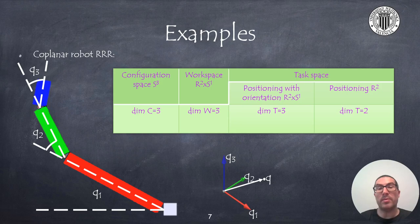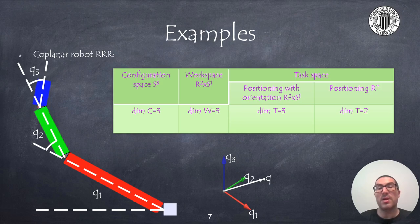Now we will analyze different robot types and the dimensions and topology of the configuration, work, and task spaces. In the case of an RRR coplanar robot, the dimension of the configuration space is 3, just like the workspace. However, the configuration space is a subspace of S3, while the workspace is a subspace of R2×S1. The vector of generalized coordinates Q is a vector of dimension 3 defined with the values of the joint angles. This robot can perform positioning tasks with orientation or simply positioning tasks, giving a task space dimension of 3 or 2 respectively. If we only perform a positioning task with a three-degree-of-freedom robot, multiple configurations will be able to fulfill the indicated task.